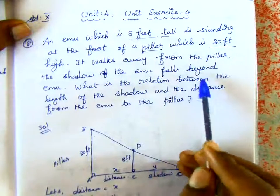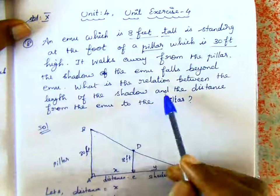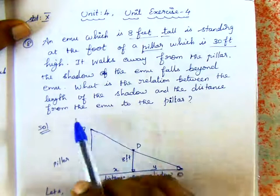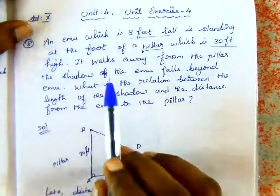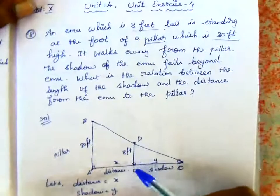The shadow of the emu falls beyond the emu. What is the relation between the length of the shadow and the distance from the emu to the pillar?